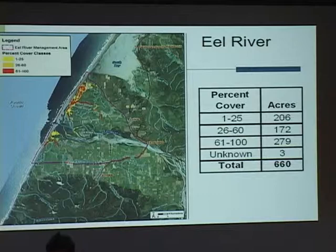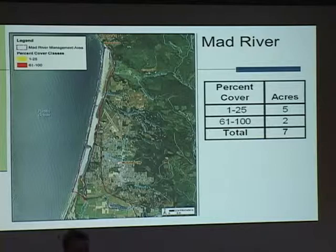Relatively there's a lot less Spartina in the Mad River estuary — a total of seven acres, and most of that, five acres, is at a low percent cover.